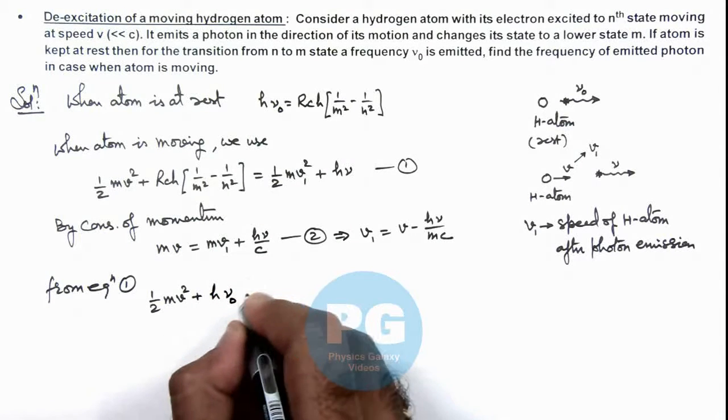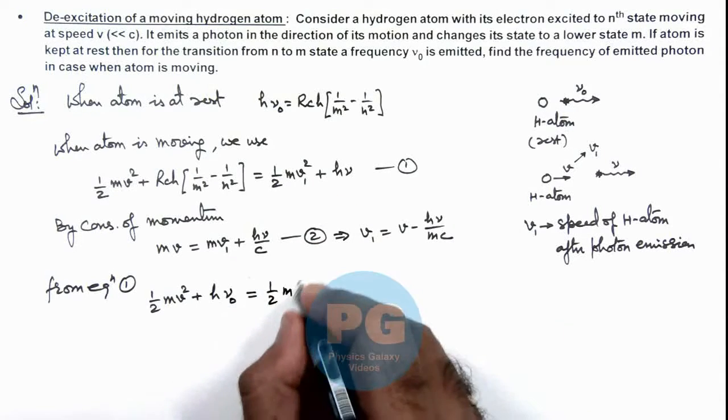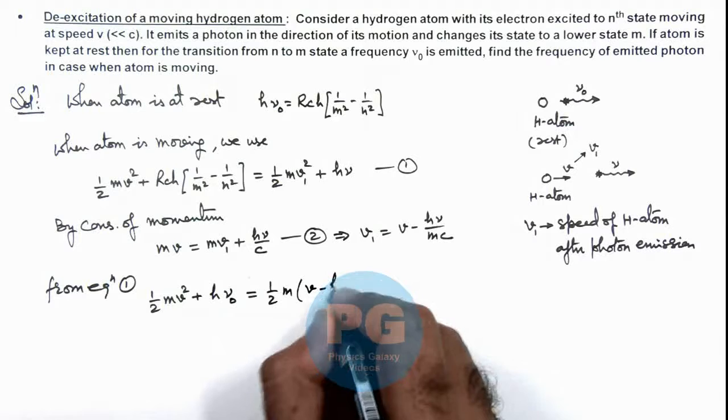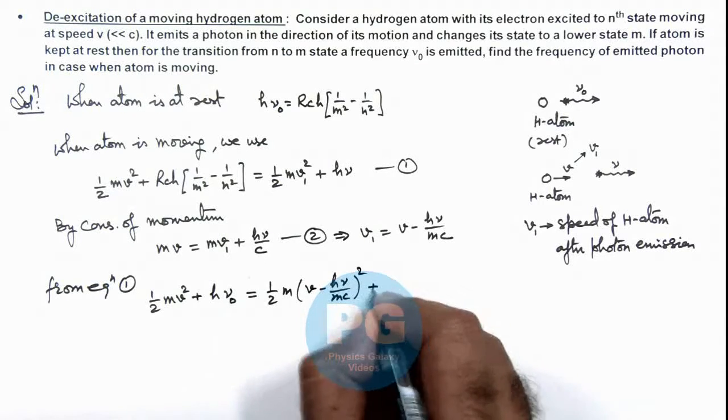We can substitute as h*nu_0, and this is equal to (1/2)m, value of v_1 we can substitute as v minus h*nu/(m*c) whole square, plus h*nu.